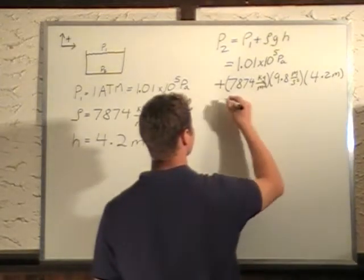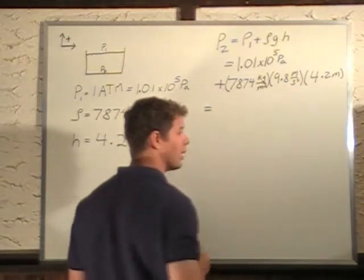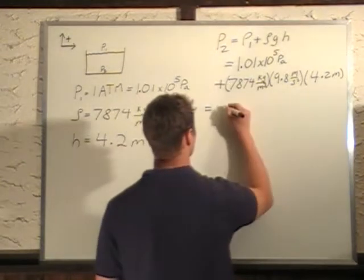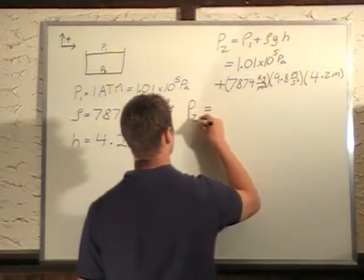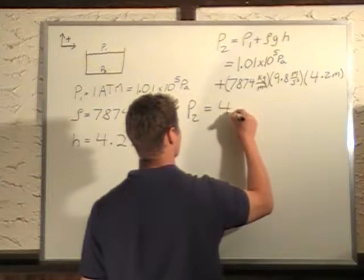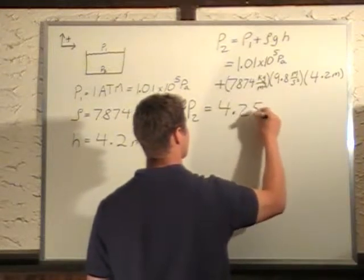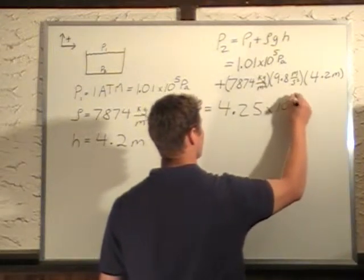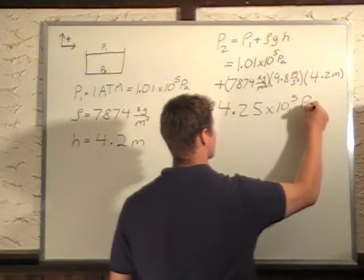So we add these up, we get a value of pressure 2, and the bottom of the vat is 4.25 times 10 to the 5 pascals.